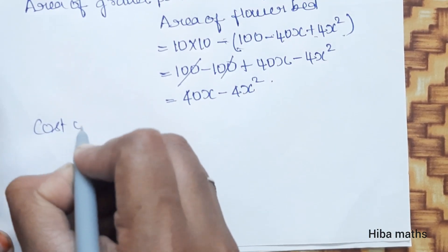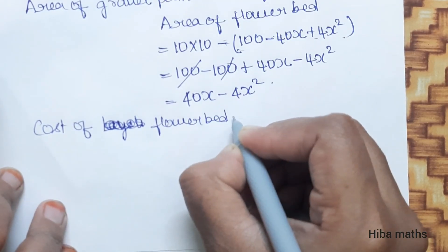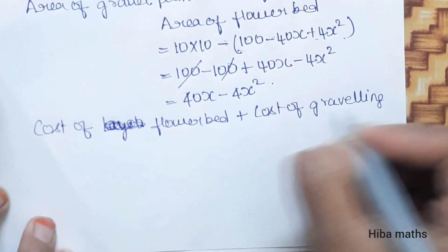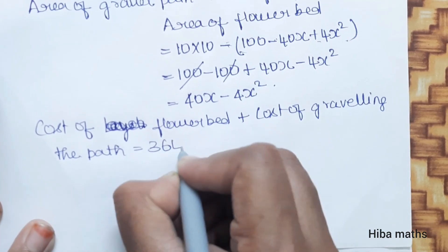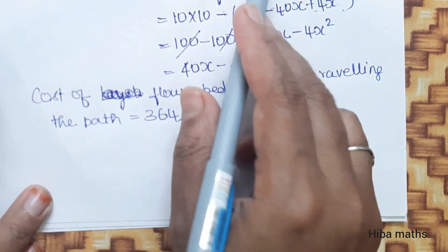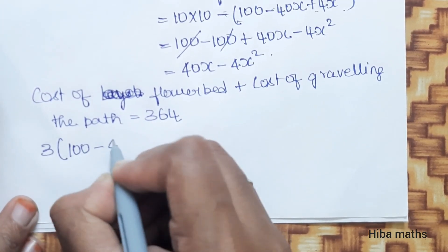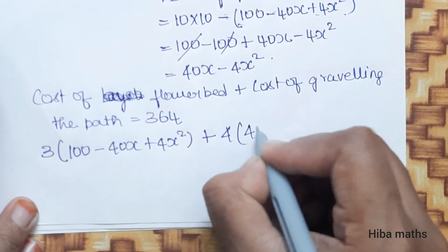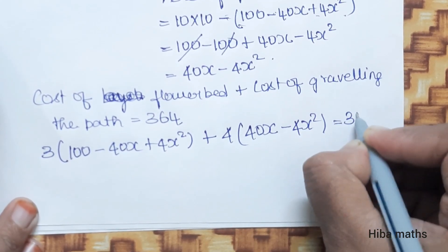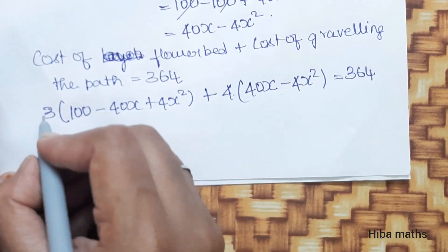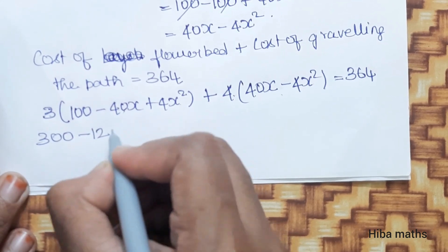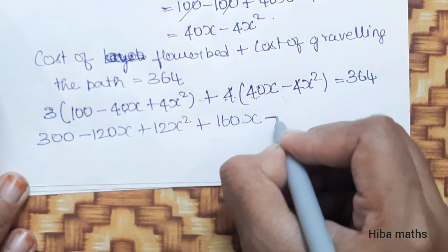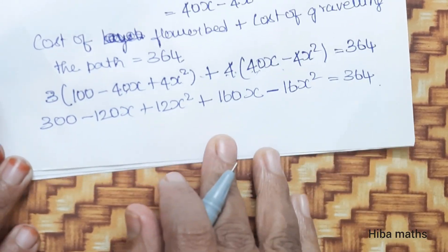Cost of flower bed plus cost of graveling the path equals 364. That is: 3 times (100 minus 40x plus 4x squared) plus 4 times (40x minus 4x squared) equals 364. Expanding: 300 minus 120x plus 12x squared plus 160x minus 16x squared equals 364.